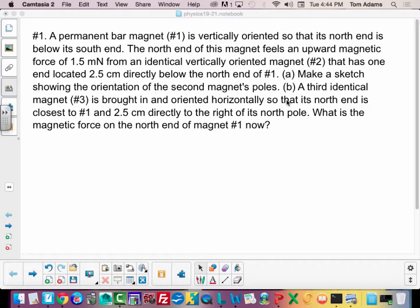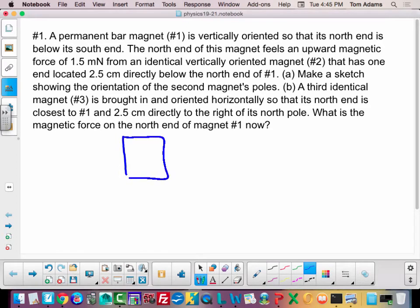Make a sketch showing the orientation of the second magnet's poles. So according to this, I have a magnet number one, this is magnet number one, that is oriented so the north end is below, the north pole is below the south pole.